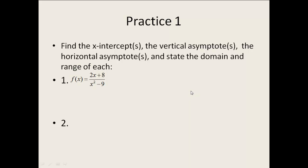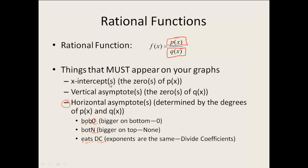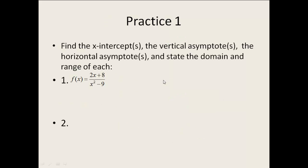Here's our first practice. We need to find the x-intercepts, vertical asymptotes, horizontal asymptotes, and state the domain and range. Starting with x-intercepts: we set the numerator equal to zero. Two x plus eight equals zero — subtract eight from both sides, divide by two — and we get x equals negative four. So for this one, our x-intercept is negative four.